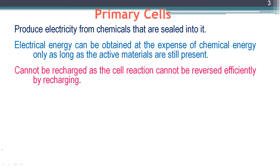The reason a primary cell cannot be recharged is that the chemical reactions occurring in the battery cannot be reversed. This cell cannot be recharged as the cell reaction cannot be reversed efficiently by recharging. Whenever we connect this battery to an external source of EMF, the chemical reactions must be reversible for it to be rechargeable, but in the case of a primary cell, this is not possible.